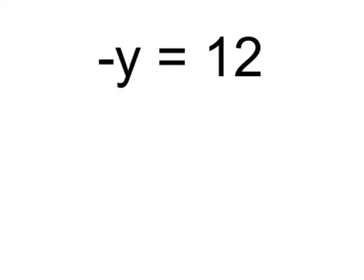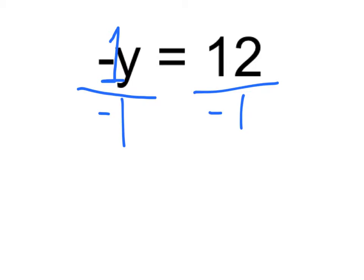Here we have negative y equals 12. We need to get y by itself. It's a negative y, so to get rid of that negative, we know that if there's a variable without a number or coefficient, we can put in that invisible one. So we're going to divide both sides by negative 1, because that is the inverse operation. Negative 1 divided by negative 1 is just 1, and these cancel out, so all we're left with is 1y, or just y equals negative 12.